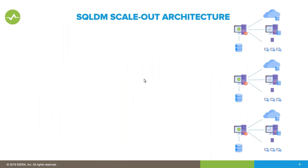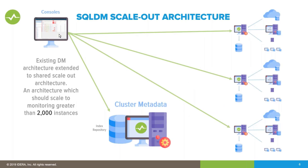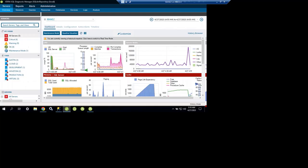In version 12, something new happened around architecture. Previously, each environment held about 300 instances — so for 900 instances you'd need three separate installations, creating silos where you couldn't see across environments. Now we solved that with a metadata federation layer. One console can connect to each environment, and through the centralized metadata you can see all 900 instances — scaling up to 2,000 instances total.